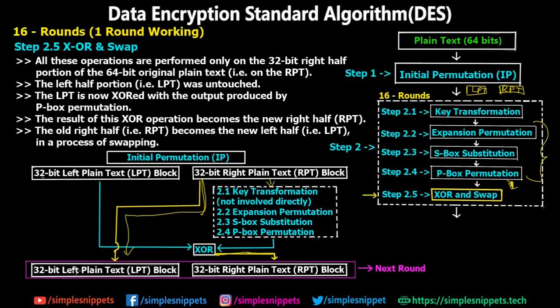After XOR and swap, we get a new LPT and a new 32-bit RPT, which are transferred to the next round. This describes one complete round. Since there are 16 rounds, these steps repeat 16 times — each time using a new sub-key and the updated LPT and RPT from the previous round. After all 16 rounds, we proceed to step 3.